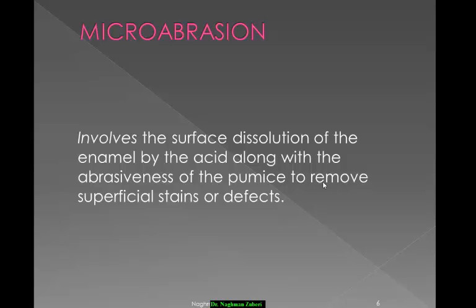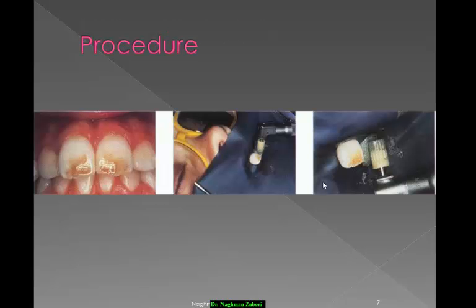In enamel microabrasion, we perform surface dissolution of the enamel using acid, and we also use an abrasive like pumice combined with the acid in order to remove the superficial stains or defects. This is the procedure.